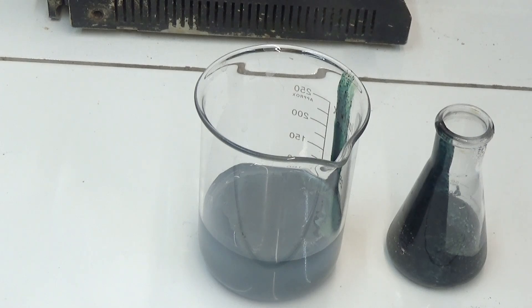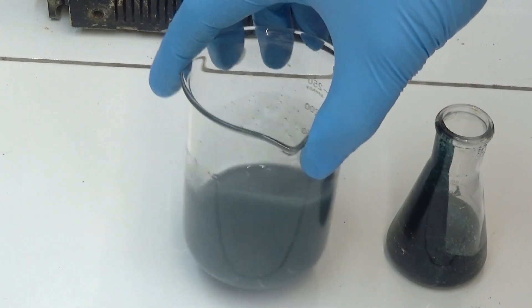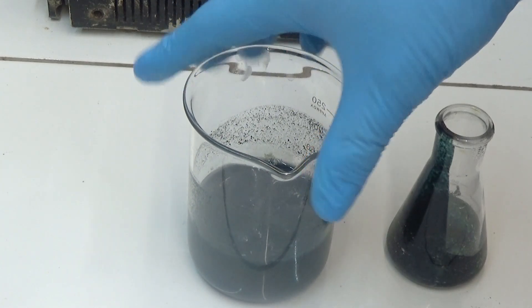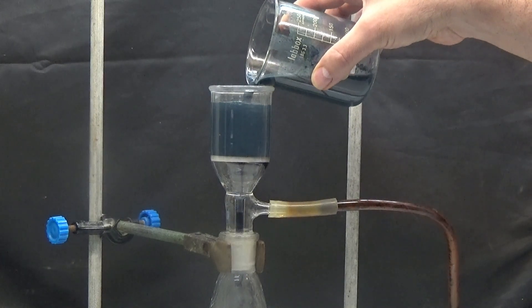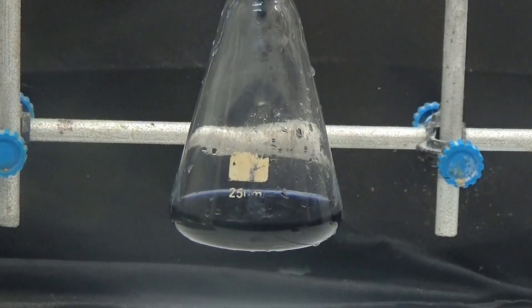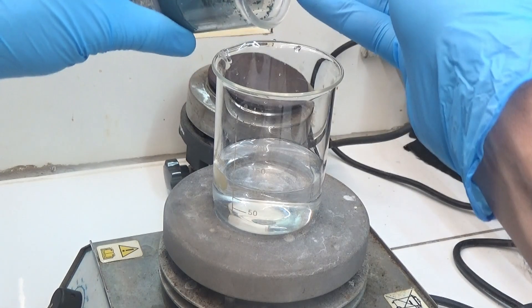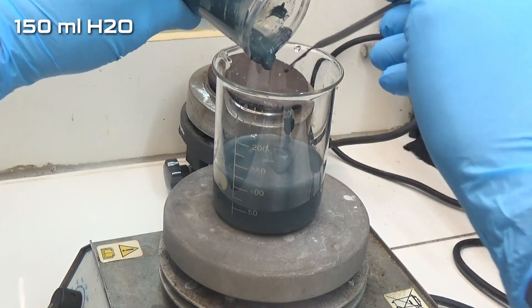Immediately a precipitate is formed. Collect the precipitate by suction and wash with little water. The collected solid cake is dispersed in about 150 milliliters of water and boiled for 40 minutes.